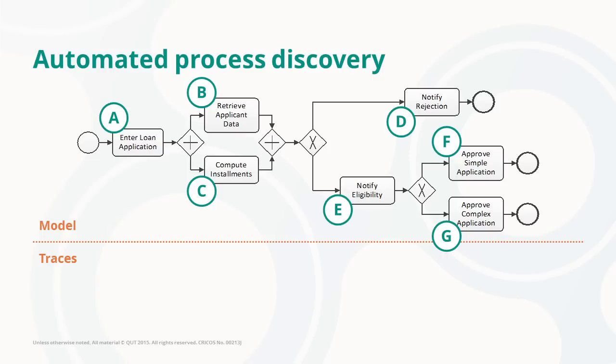You see essentially there are three different possible outcomes. You can notify the rejection, you can approve a simple notification, and you could do an approval with a complex notification.